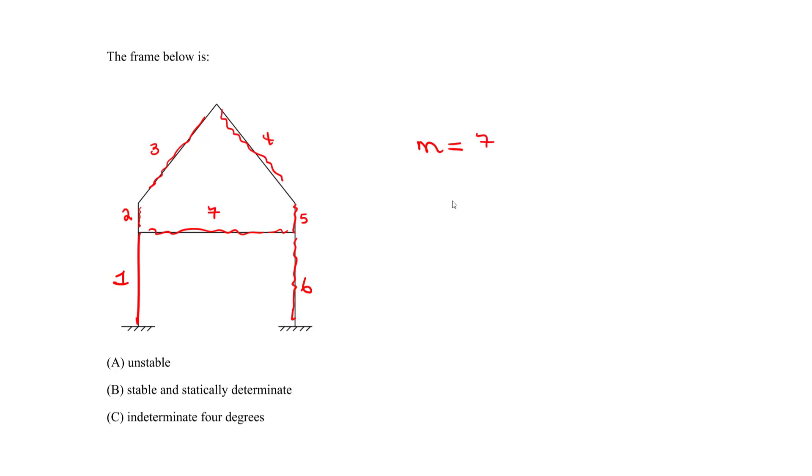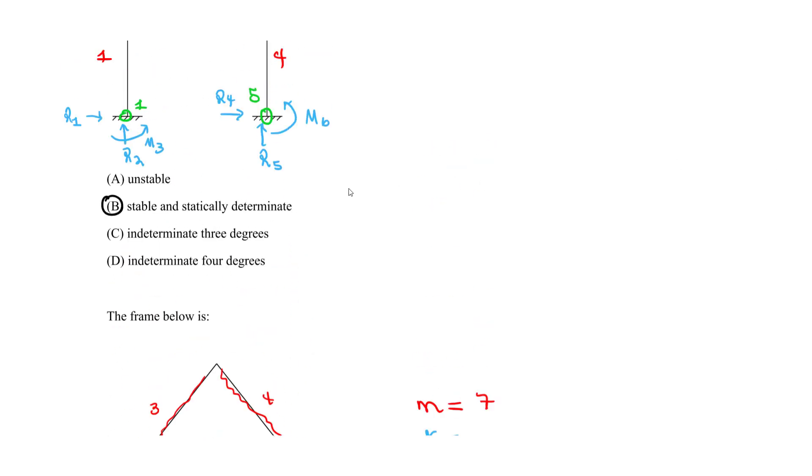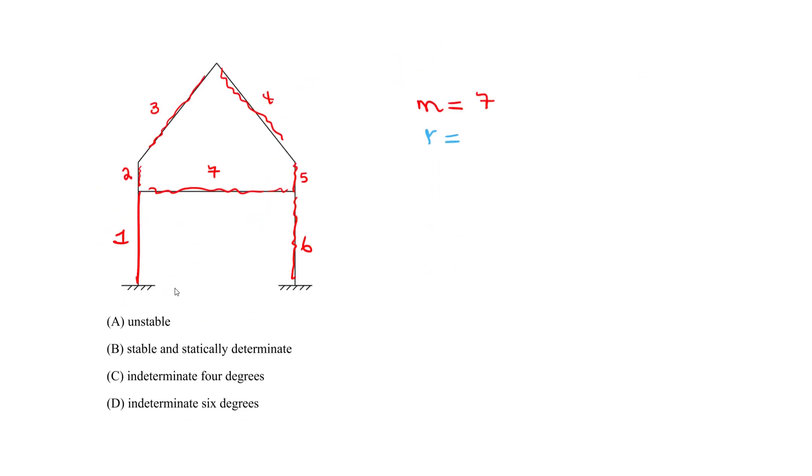So now let's find the reactions R, and R here is obviously the same as the last one, because we have at each fixed end, you have three possible reactions. So we know we'll have R1, R2, moment three, then we have the R4, R5, and a moment, let's call it moment six. So we have six reactions here. So R is six.